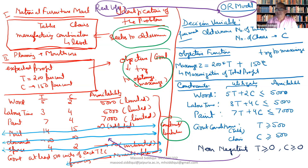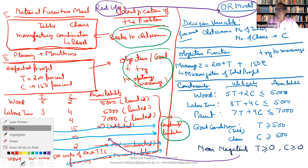Now, if you observe this mathematical model, these are the mathematical symbols and they are the functions. If we consider them, apart from the decision variables, the degree of T is one, and the degree of C is again one. So in the objective function, all the decision variables are having degree one. So it is linear in nature.